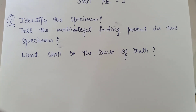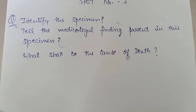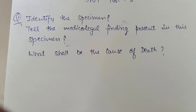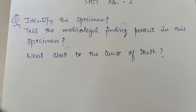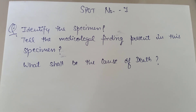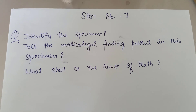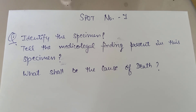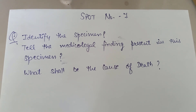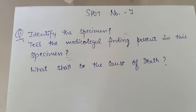The question asked was: identify the specimen and tell the medico-legal findings present in this specimen. It is a subdural hemorrhage. What shall be the cause of death? The cause of death in this case will be compression of the brain stem. The pressure caused by the hematoma compresses the brain stem, where vital centers — respiratory centers and cardiac centers — are located, and because of this compression the person dies.